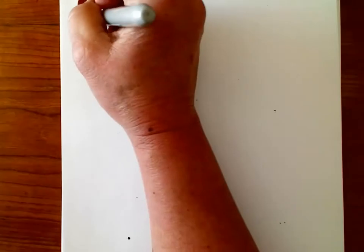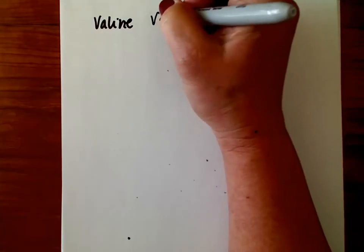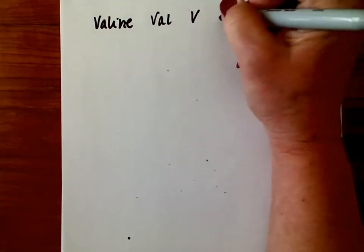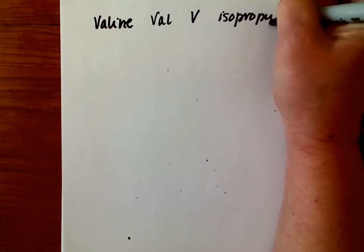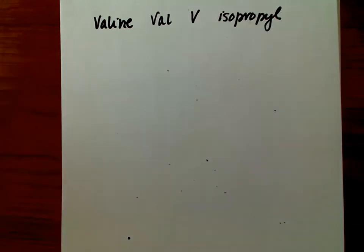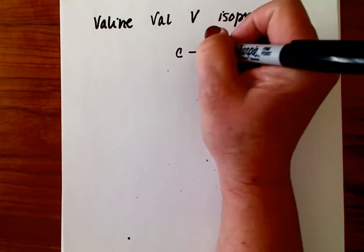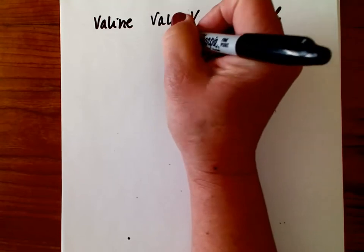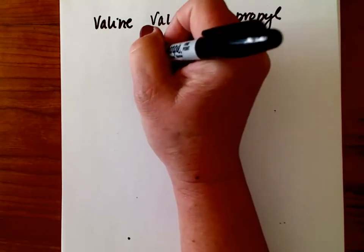So next we have valine — VAL, V. This has an isopropyl R group as its side chain. That means it has three carbons in the chain, but it connects to the alpha carbon through the middle carbon in that propyl group.